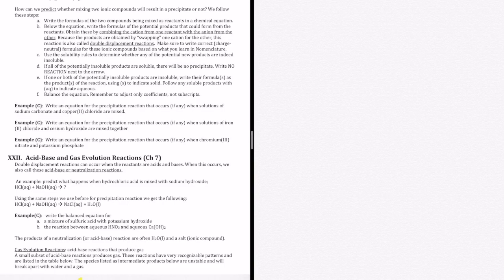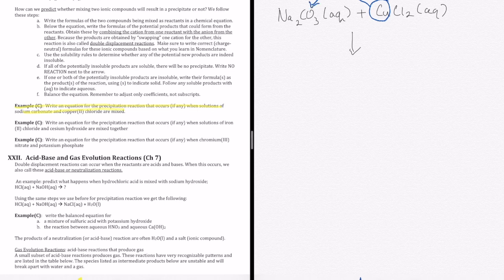Okay, let me show you how to apply this idea in an example. It says that we're going to write an equation for the precipitation reaction that occurs, if any, when solutions of sodium carbonate and copper chloride are mixed. We need to first write our reactants. Sodium carbonate is Na2CO3, and this is going to be aqueous. And then copper chloride is CuCl2. These are both aqueous species. And then the product is going to be a swap of the two cations. So I would take copper, and now I would partner that up with carbonate. And then I would take sodium, and I would partner that up with chloride. So my product is going to be sodium chloride and copper carbonate.